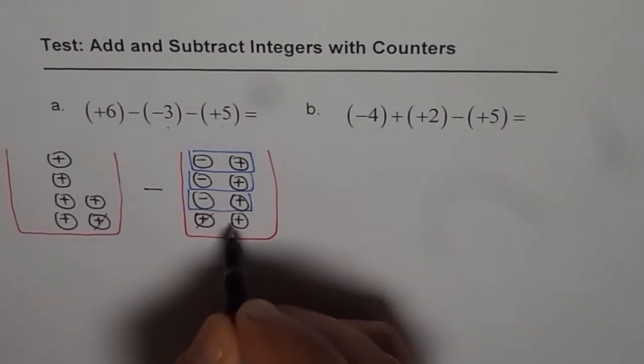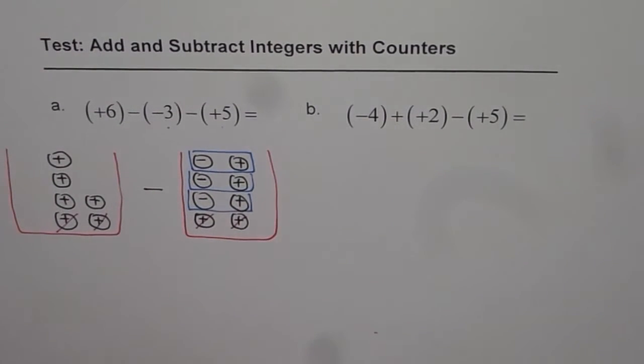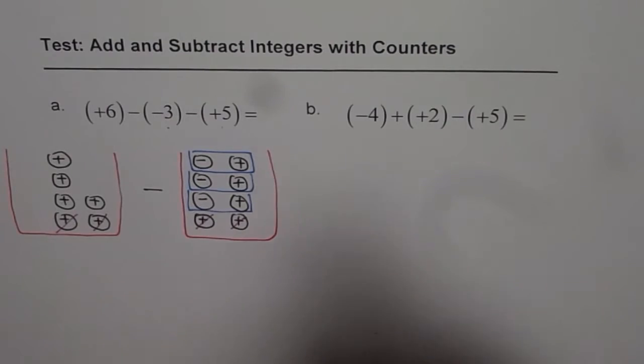So 1 positive and the next one. What remains is 1, 2, 3, 4. So the answer for us is (+4).